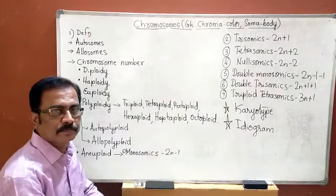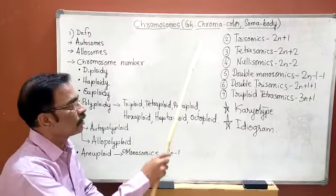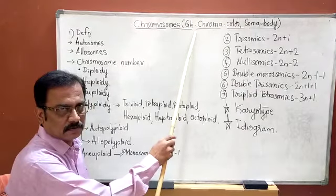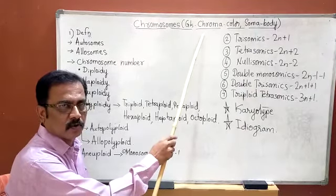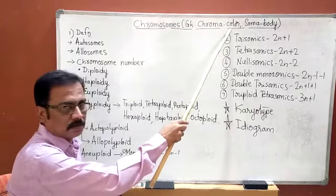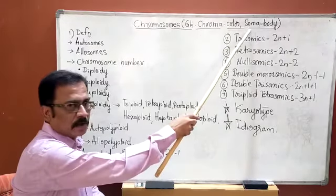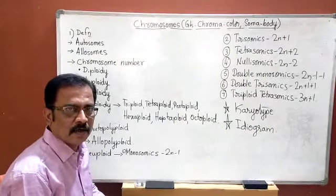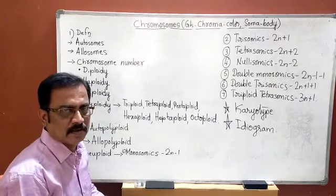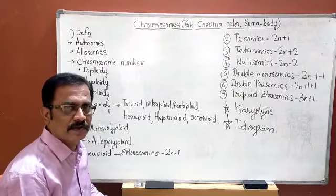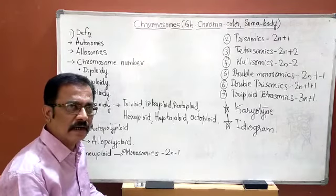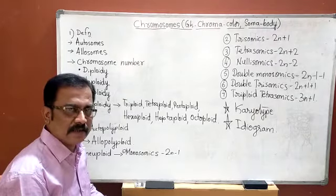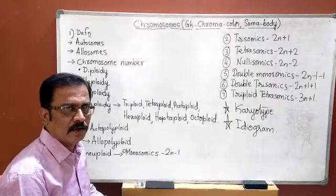Chromosome is a Greek-derived word. Chroma means colour, and soma means body — so it means coloured body. In the sense, it refers to something which stains deeply in the cell or in the nucleus.